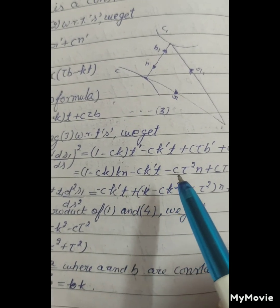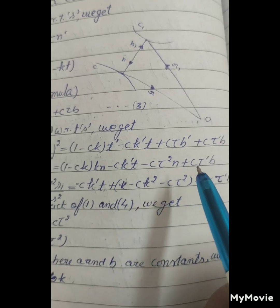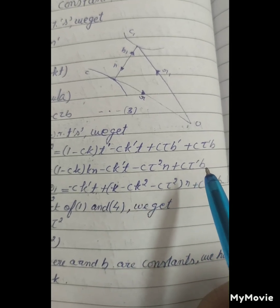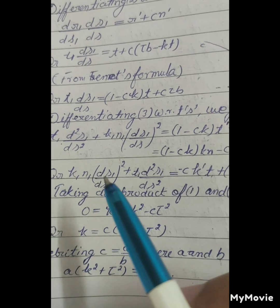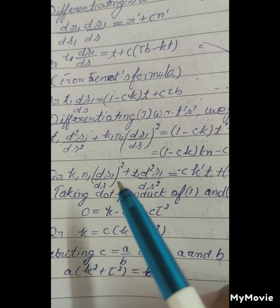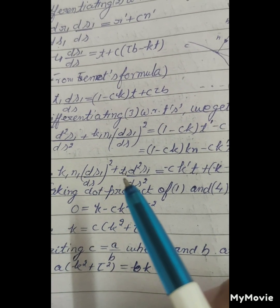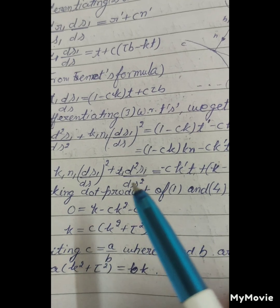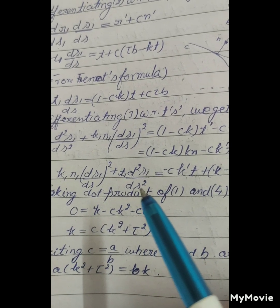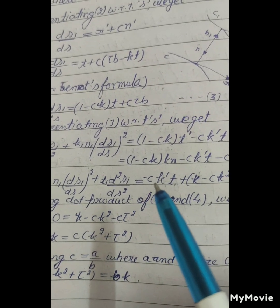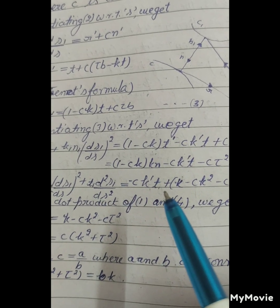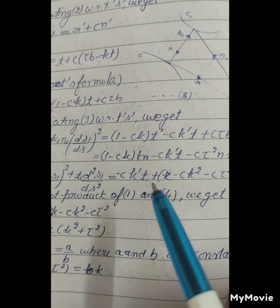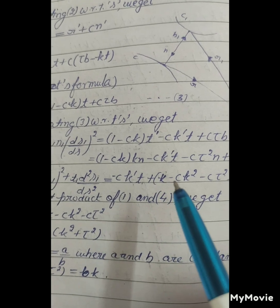Or k₁n₁(ds₁/ds)² + t₁(d²s₁/ds²) = -ck't + [k - ck² - cτ²]n + cτ'b.